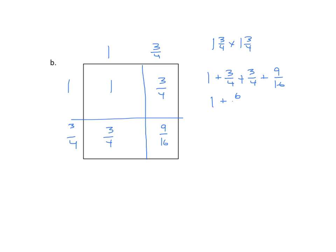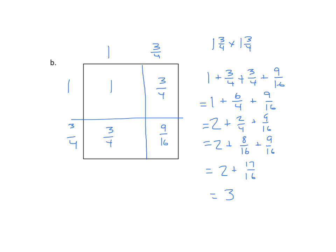We have one plus six-fourths. Remember, we can add the ones with like denominators, but not the ones with unlike. Six-fourths is the same as one and two-fourths, so we now have two plus two-fourths plus nine-sixteenths. We can convert two-fourths to sixteenths by multiplying both numerator and denominator by four, so two-fourths becomes eight-sixteenths. That's plus nine-sixteenths, giving us two plus seventeen-sixteenths, which becomes three and one-sixteenth square inches.